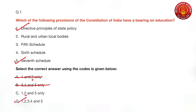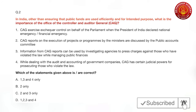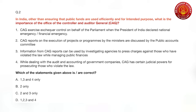Now the second question: in India, other than ensuring public funds are used efficiently and for their intended purpose, what is the importance of the office of the Comptroller and Auditor General (CAG)? The first statement says CAG exercises exchequer control on behalf of Parliament when the President declares national or financial emergency. The second statement says CAG reports on execution of projects or programs by ministries are discussed by the Public Accounts Committee — this second statement is correct, so the first option is eliminated.